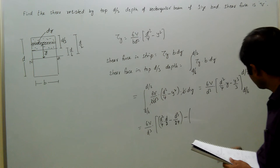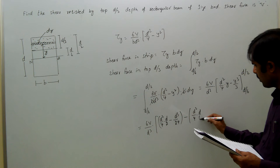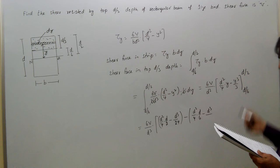Substituting d by 6, that is d square by 4 into d by 6 minus d cube by 6 cube into 3, 6 cube d by 6, 6 cube into 3, that is 216 into 3.